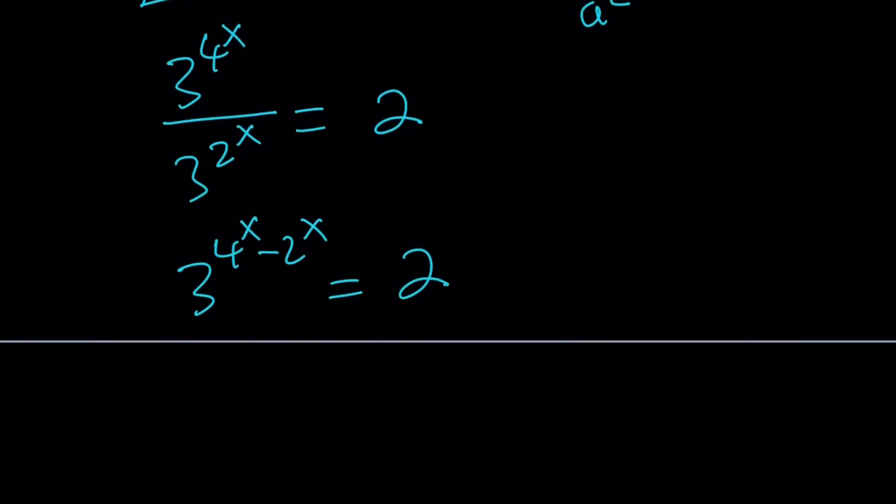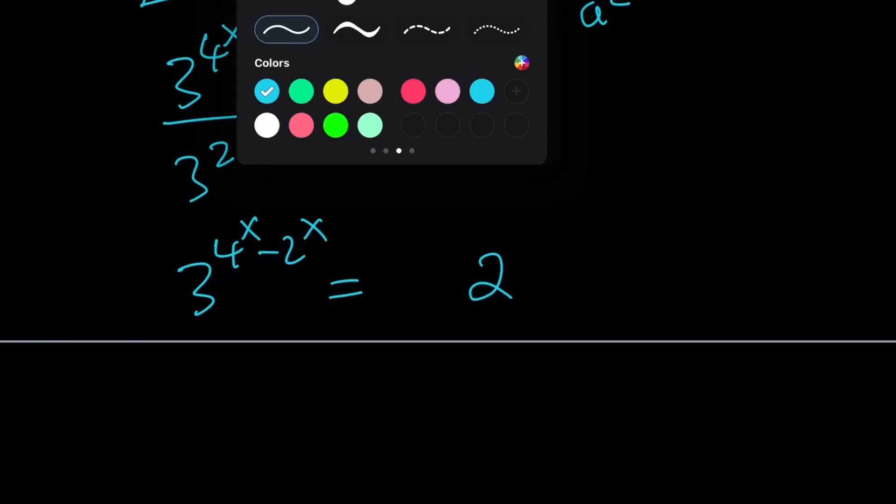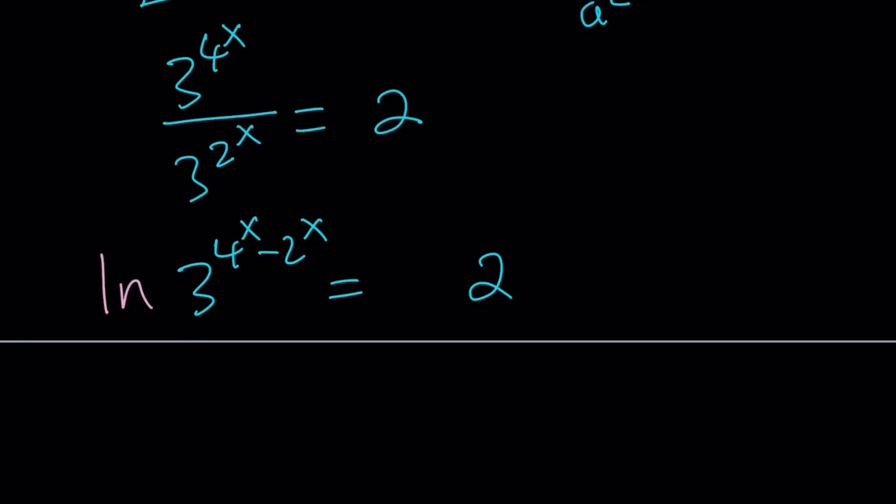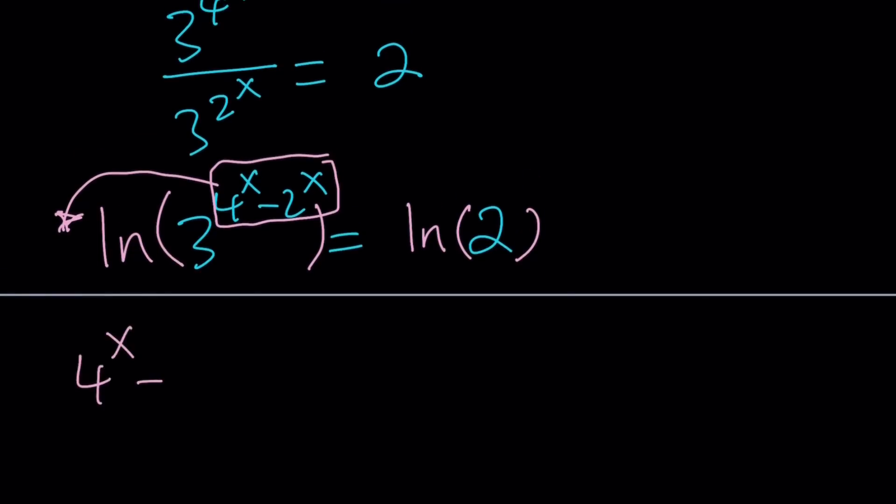At this point I think taking natural log on both sides would be meaningful. Let's natural log this side and natural log this side. One of the things that's super important and that's why we log both sides is to bring this down so we can make it a coefficient or multiplier: (4^x - 2^x)·ln 3 = ln 2.